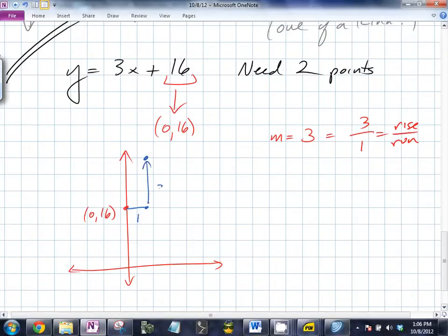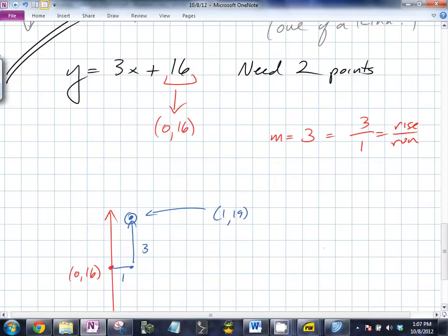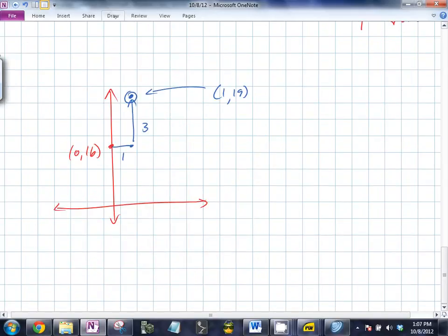So we have 2 points. Can someone tell me what that next point is? 1, 19. You have 2 points. What do you do now? You just connect the dots. Do you need any more points to graph this line? No. No, you do not. No, you do not need anything else.